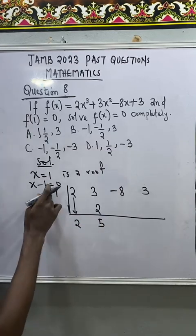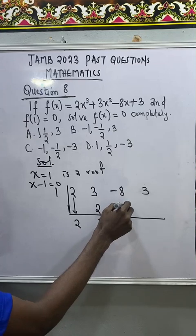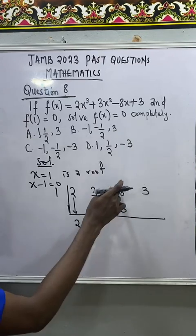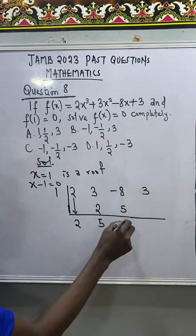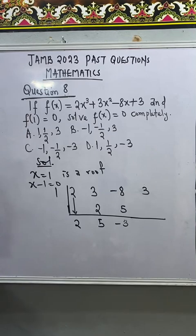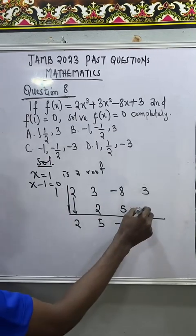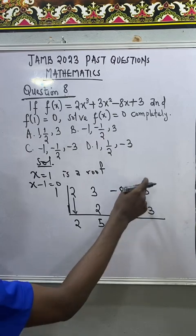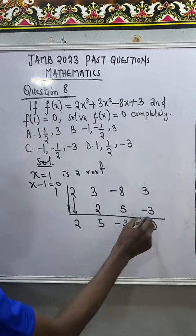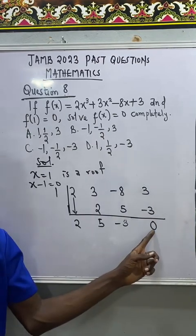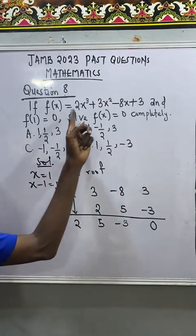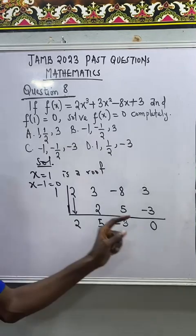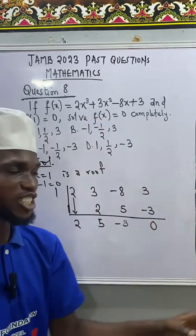Multiply this 5 by this 1. That will give me 5 again. Add this and this together. You have minus 8 plus 5. That will give me minus 3. Now, multiply this by this. That will give me minus 3. Add this and this together. 3 minus 3. That will give me 0. This final result that we have here that is equal to 0 indicates that x equal to 1 truly satisfies the polynomial or the expression.